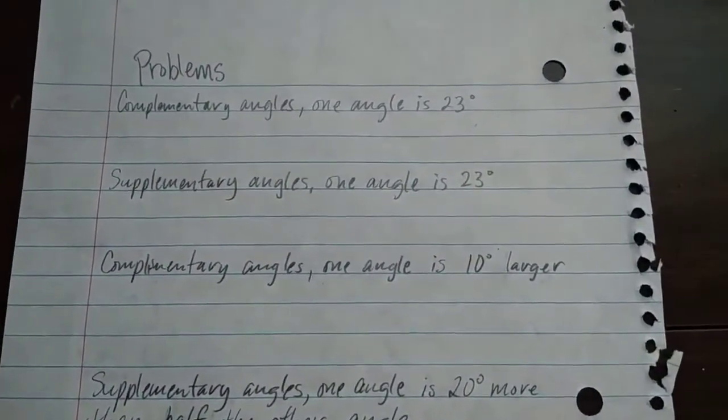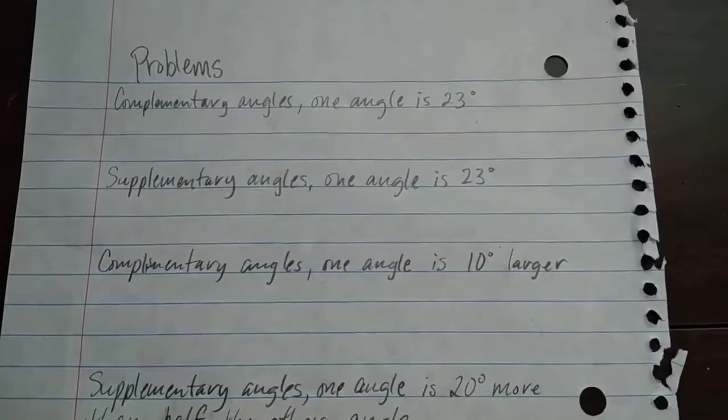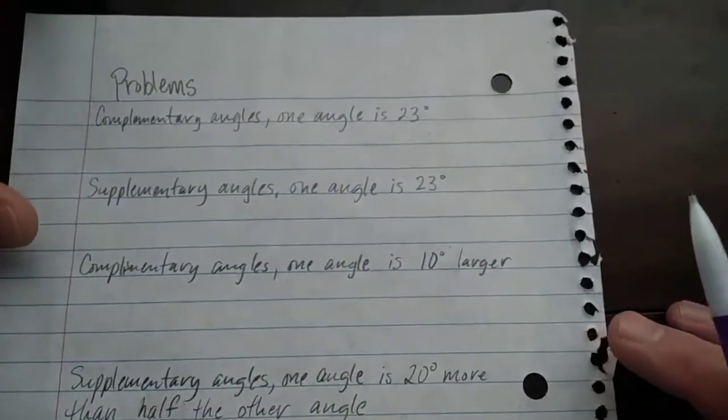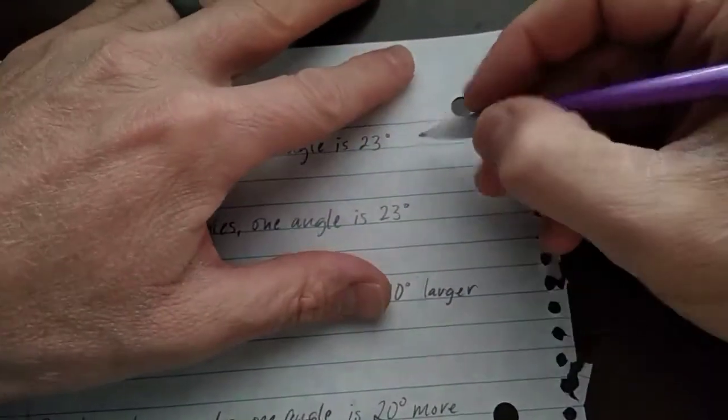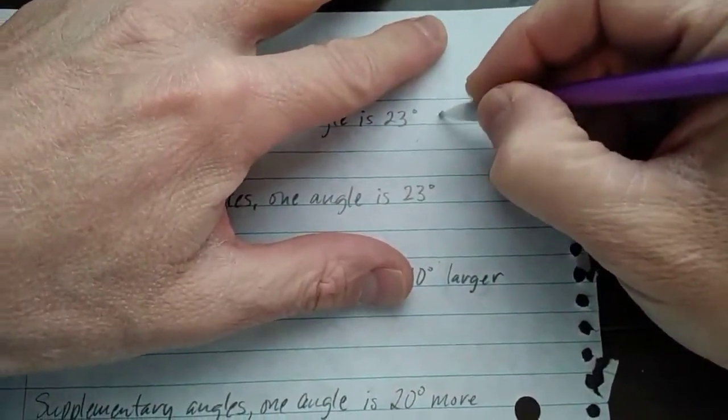Now we know that complementary angles are two angles that have a sum of 90 degrees. So really we're asking ourselves, what angle measure plus 23 equals 90? And I would encourage you to even write it that way.